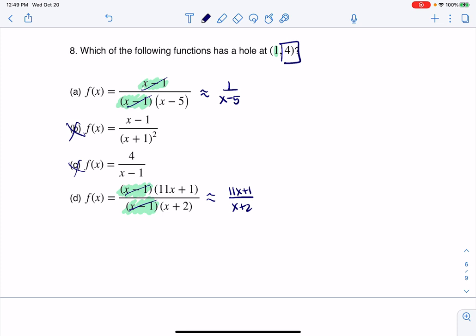So if f of x is approximately 1 over x minus 5, then f of 1, even though it's a hole, would have approximately been 1 over 1 minus 5. That would have been 1 over negative 4. But that is not x equaling 4, so this is not the answer. All right. Let's see here.